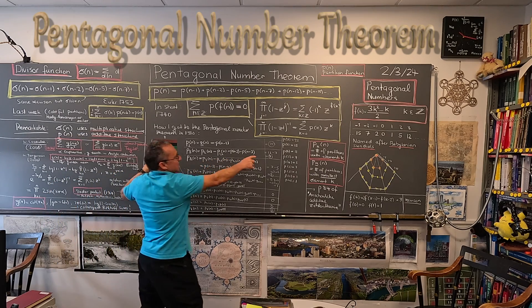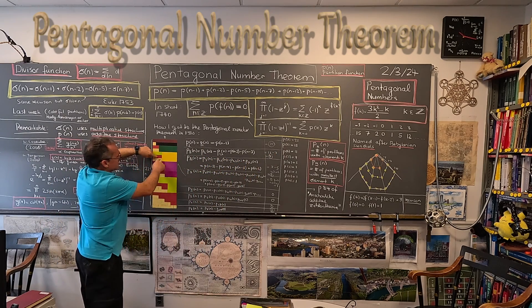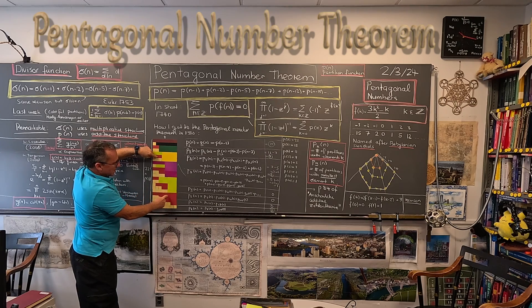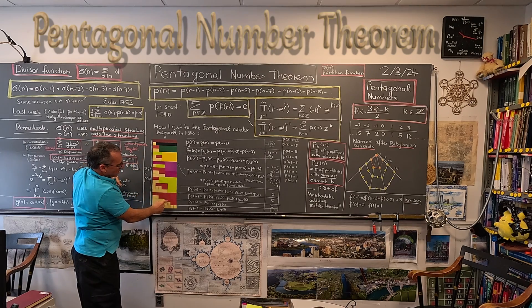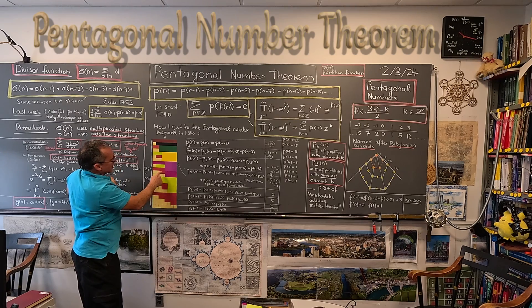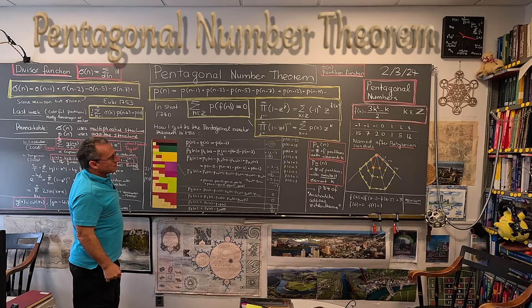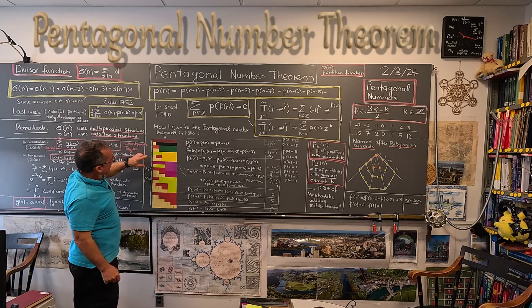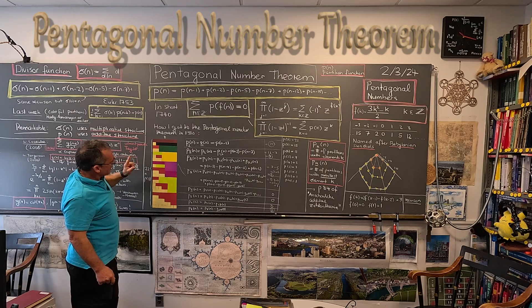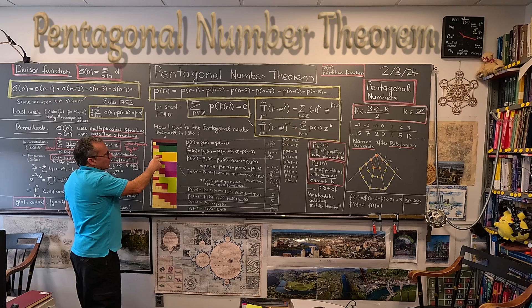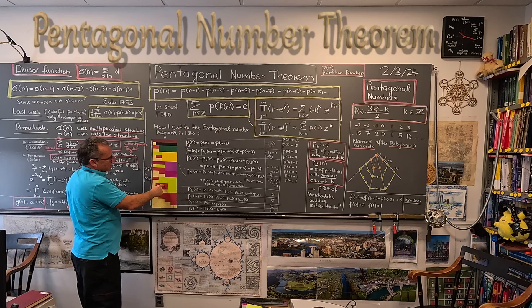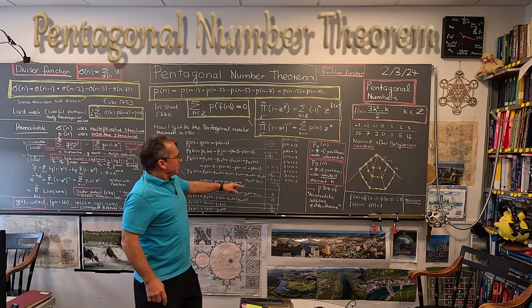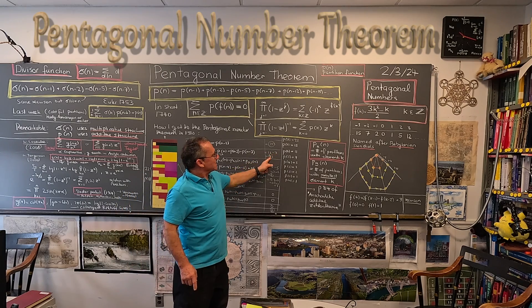There are seven partitions where 2 is not the smallest element. So we have 11 minus 7, giving 4 partitions where 2 is the smallest. That's the next count.